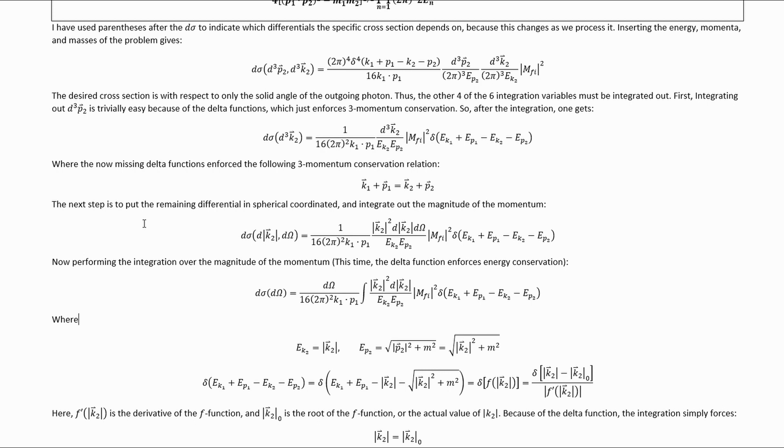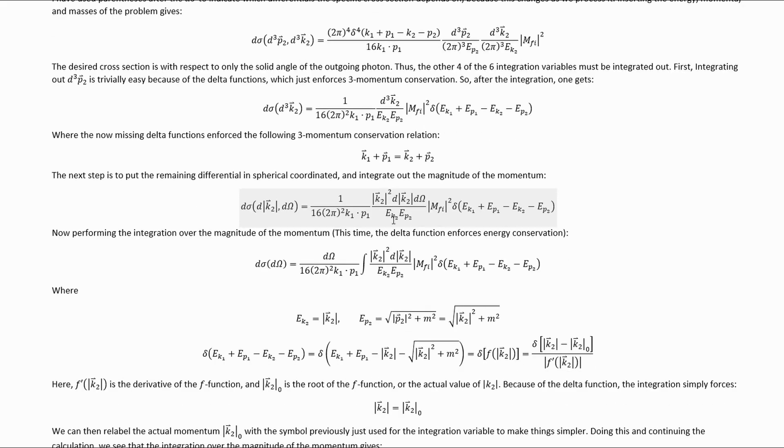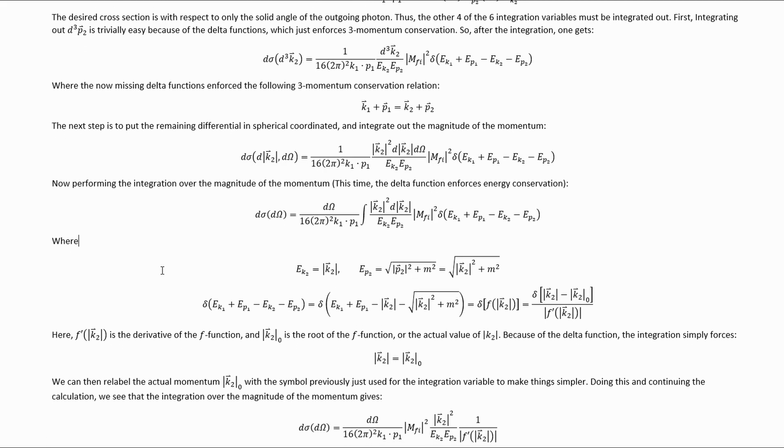Next, we need to put the remaining differential in spherical coordinates to reveal the solid angle differential associated with the outgoing photon. Then we can integrate over this momentum magnitude. That integration can be done by making use of that classic delta function identity for when you're integrating over delta functions that are a more complicated function of the variable. Its net effect is to put the absolute value of the derivative of the function that is the argument of the delta function in the denominator.